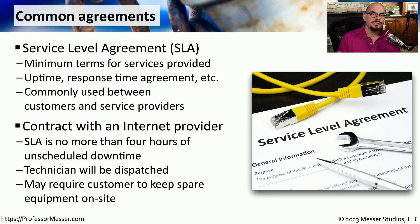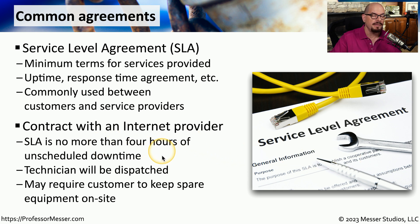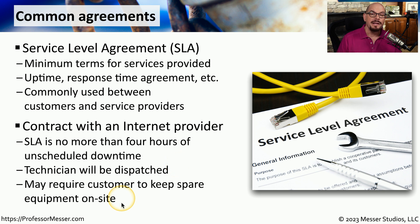For example, you might have certain requirements when entering into a contract with an internet service provider — such as no more than four hours of unscheduled downtime. If there is downtime, you'd like a technician to be dispatched, and you might even agree to keep equipment on site by the ISP in case your equipment were to fail. All of this can be written into the SLA so that both parties understand the exact requirements for service levels between the two companies.